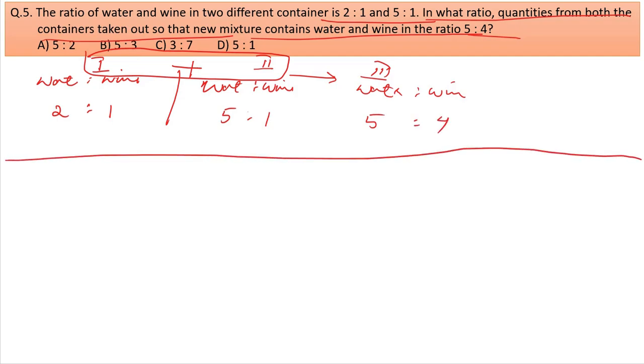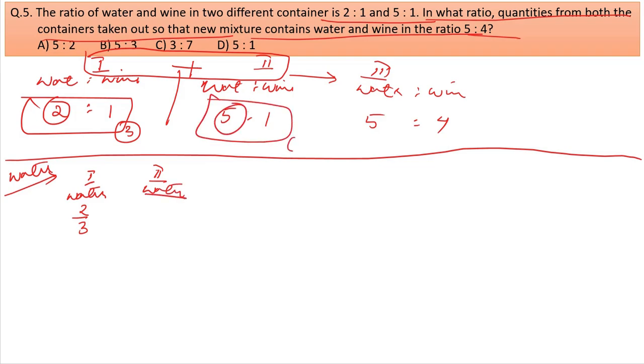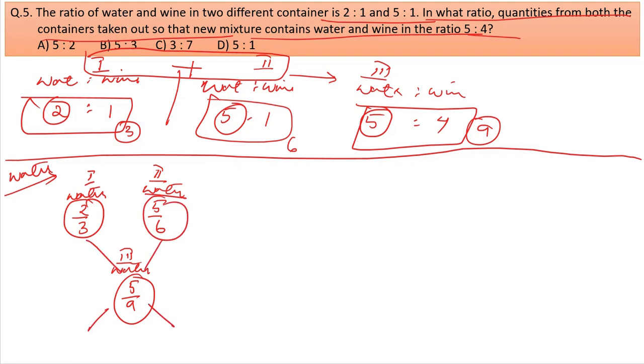We need to compare water. In container 1, water is 2 out of 3, so 2/3. In container 2, water is 5 out of 6, so 5/6. In the final mixture, water is 5 out of 9, so 5/9.